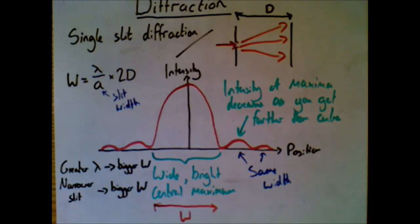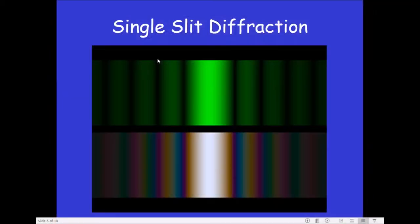Like when we discussed double slits, we can also think about what happens with white light instead of a single wavelength. As you can see on screen, the top image is for a single wavelength, and the bottom one shows white light — different wavelengths diffract by different amounts, so you will see blurred fringes and start to see the spectrum, just like we did with the double slit.